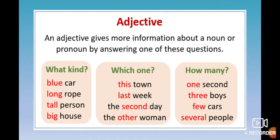An adjective gives more information about a noun or a pronoun by answering one of these questions. What kind? — blue car, long rope, tall person, big house. Which one? — this town, last week, the second day, the other woman. How many? — one second, three boys, few cars, several people. And so on — we have many different examples here.